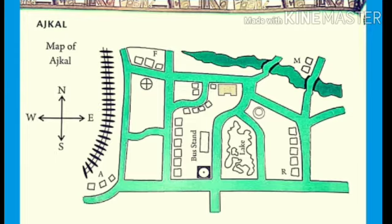Before doing this exercise, you should know about directions. As you know, there are four directions: East, West, North, and South. The direction of something from a place tells us the way in which we have to go to reach it.